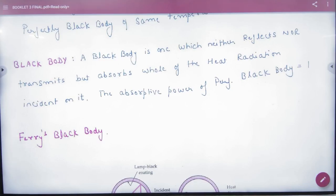The next one is the black body. A perfectly black body is defined as a body that neither reflects nor transmits, but absorbs all incident radiation. So what is the absorptive power of a perfectly black body? One.